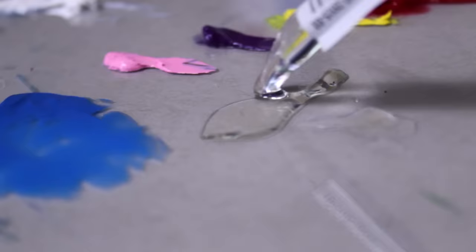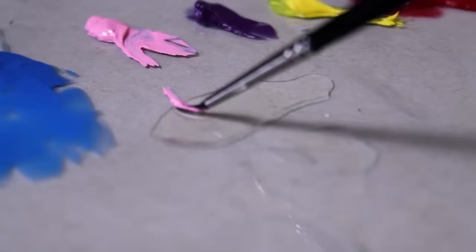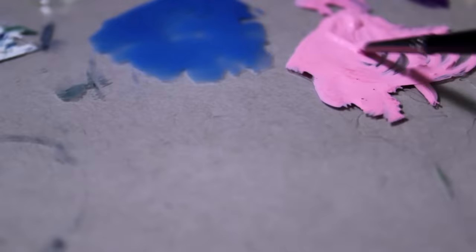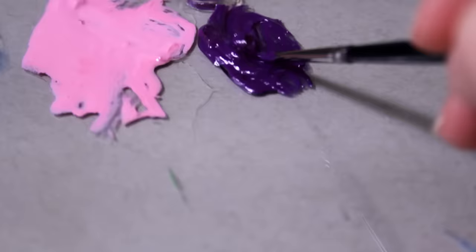My favorite medium right now is Galkyd, which is an alkyd resin medium fairly recent to the world of oil painting. It levels brushstrokes and makes the surface really smooth, flat, and glossy. Lately I've really been enjoying this effect in my work. It also speeds up the drying time by a lot, so layers with Galkyd in them will typically dry within 24 hours, sometimes even sooner if it's a really thin layer.